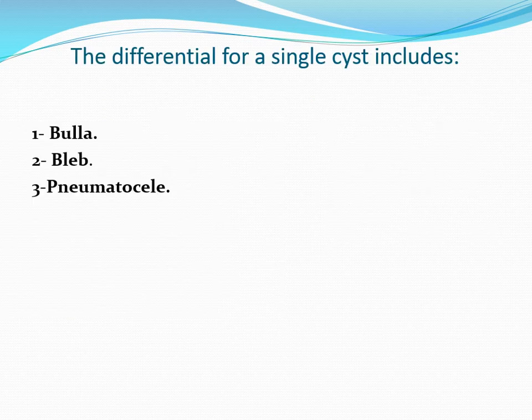The differential diagnosis for a single cyst includes bullae, bleb, and pneumatocele.